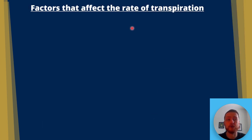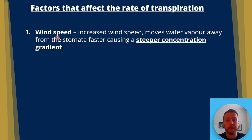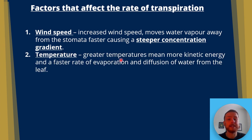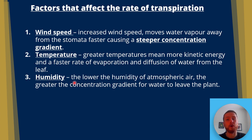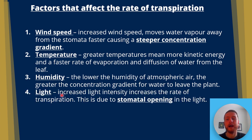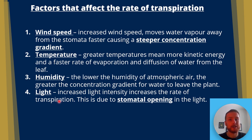What are the factors that affect transpiration? First, wind speed — increased wind speed moves water vapor away from the stomata faster, causing a steeper concentration gradient. Second, temperature — greater temperatures mean more kinetic energy and a faster rate of evaporation and diffusion. Third, humidity — the lower the humidity, the greater the concentration gradient for water to leave the plant. Fourth, light — increased light intensity increases the rate of transpiration because the stomata open in high light intensities, allowing water to leave through the pores.